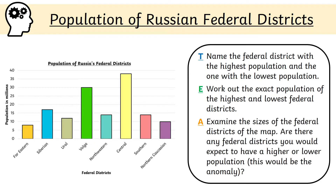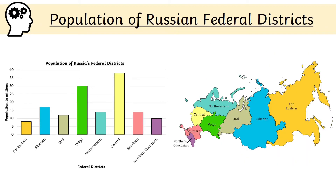The anomaly is data that doesn't fit the trend or stands out as being odd. To identify this, we look at the map of the districts again and compare the size of the district with its population. For example, if we take the Central district, on the map it is the third smallest district, but on the bar graph it has the highest population — this would be an anomaly.